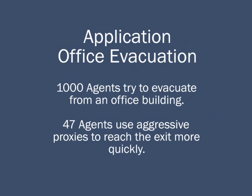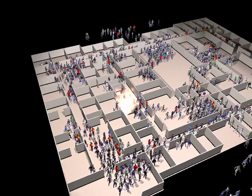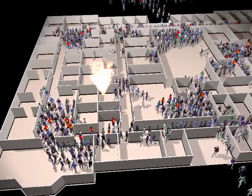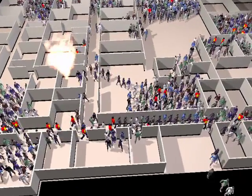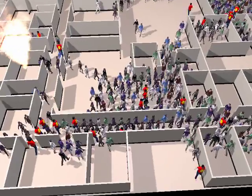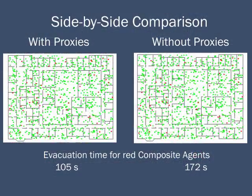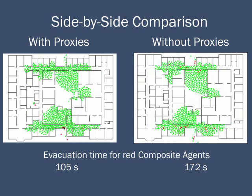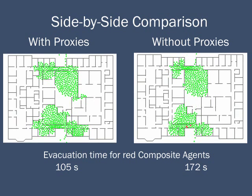Here we show an application of aggressive agents. One thousand agents, forty-seven with aggression proxies, try to evacuate a burning office building. The agents wearing the bright red t-shirts have aggression proxies. Note how they progress more easily through dense crowds than the basic agents. We illustrate the impact of aggression proxies in this side-by-side comparison. Aggression proxies should lead to faster evacuation for the composite agents, as the two simulations below indicate.